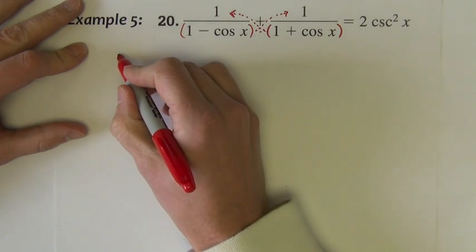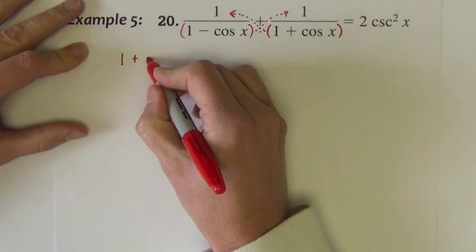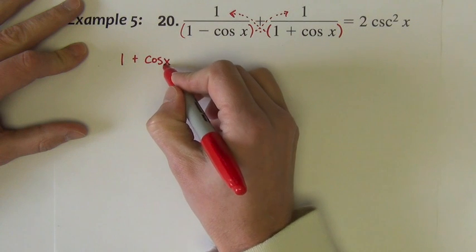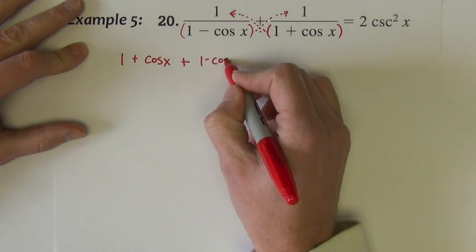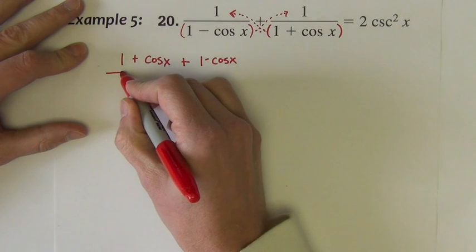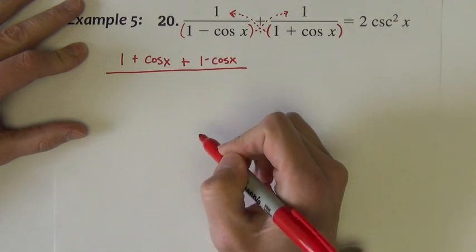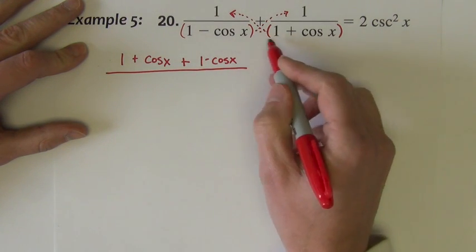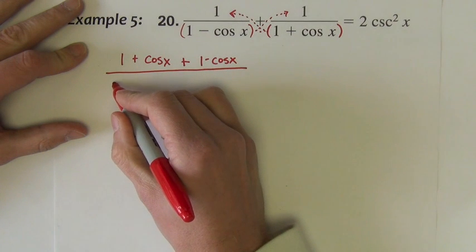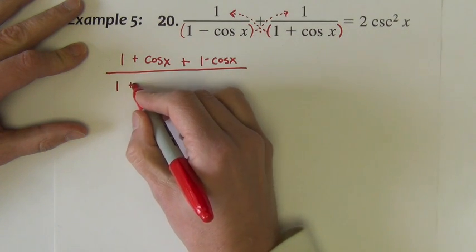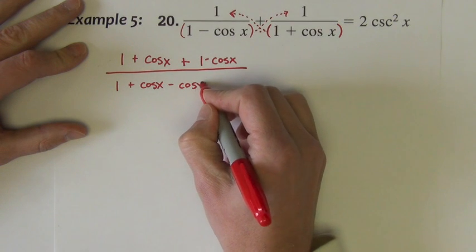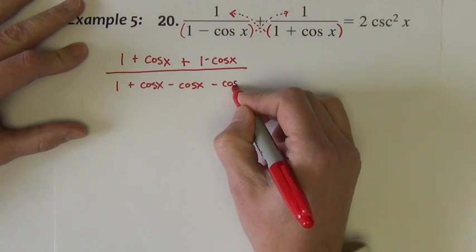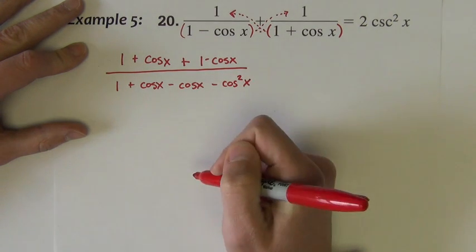Then we're going to multiply the two denominators together. So let's write that. We've got 1 plus cosine x plus 1 minus cosine x divided by, now we're going to multiply these together so that's a FOIL problem.